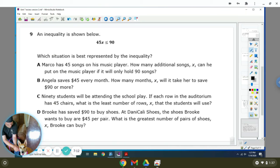Inequality is shown below. Which situation is best represented by the inequality? Marco has 45 songs on his music player. How many additional songs can you put on the music player if it can only hold 90 songs? An additional means that you're adding. So A is not correct. Angela saves $45 every month. How many months will it take him to save $90 or more? So that's saying 45X is $90 or more. So it would be greater than or equal to 90. So that's not it. This sign's wrong.